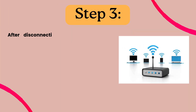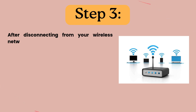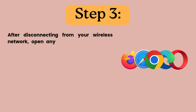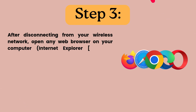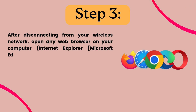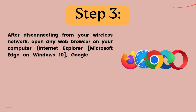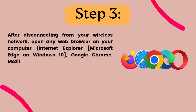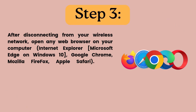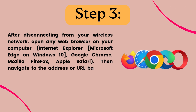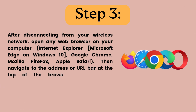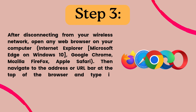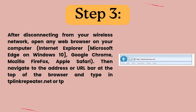Step 3. After disconnecting from your wireless network, open any web browser on your computer — Internet Explorer, Microsoft Edge on Windows 10, Google Chrome, Mozilla Firefox, or Apple Safari. Then navigate to the address or URL bar at the top of the browser and type in tplinkrepeater.net or tplinkextender.net.